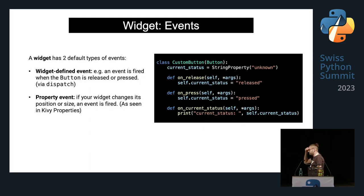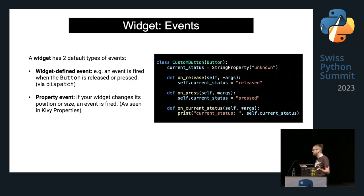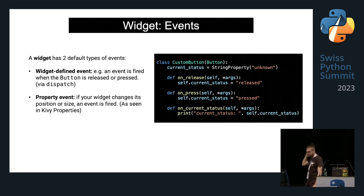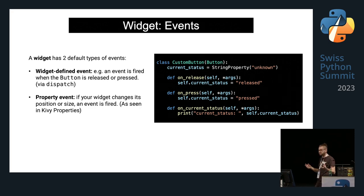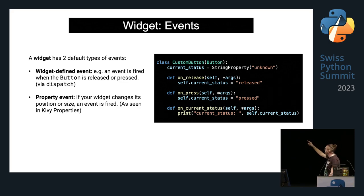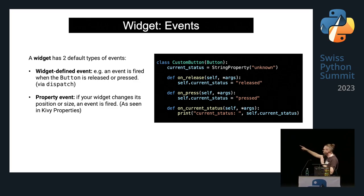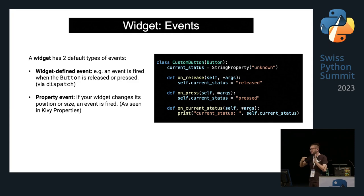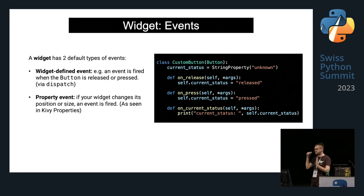A widget has two default types of events: widget-defined events — for example, an event fired when a button is pressed or released — and property events, which fire when properties like position or size change. In the example, we have a custom button with a current_status string property. When the button is pressed, on_press is called and sets current_status to 'press', which triggers on_current_status and prints the value. On release, current_status is set to 'release' and on_current_status prints again.